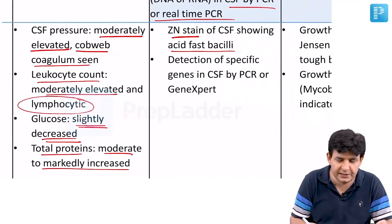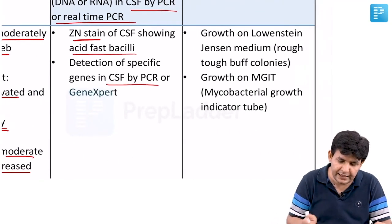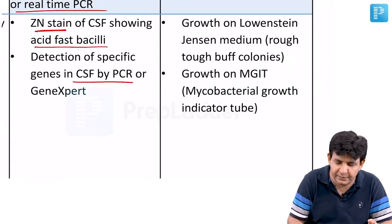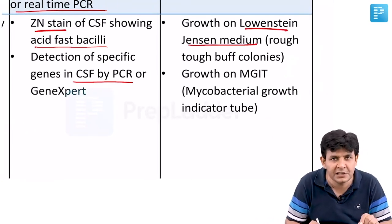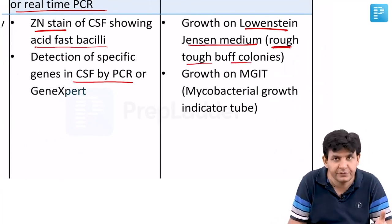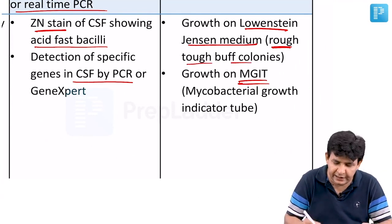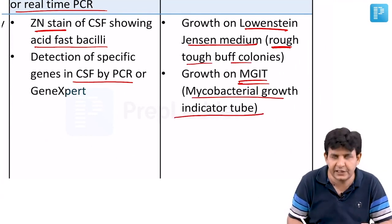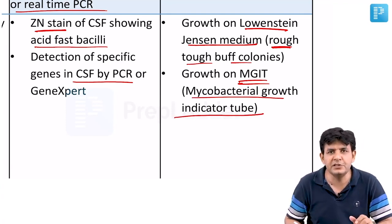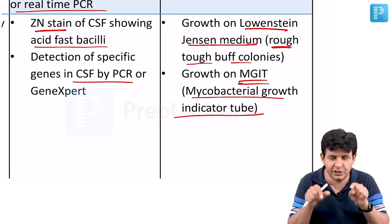For diagnosis of tubercular meningitis, use Ziehl-Neelsen stain of CSF to look for acid-fast bacilli, or PCR. For culture, use LJ medium where colonies appear in six to eight weeks as rough, tough, and buff colonies. A more sophisticated method is MGIT - Mycobacterial Growth Indicator Tube.